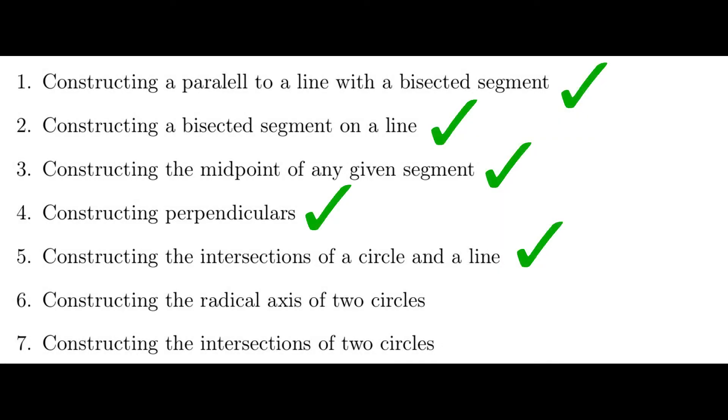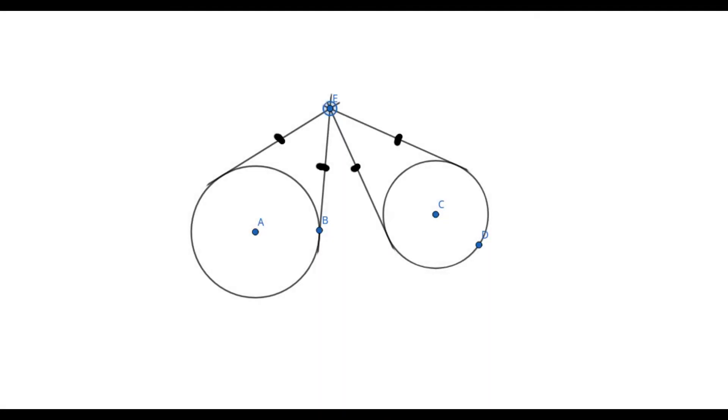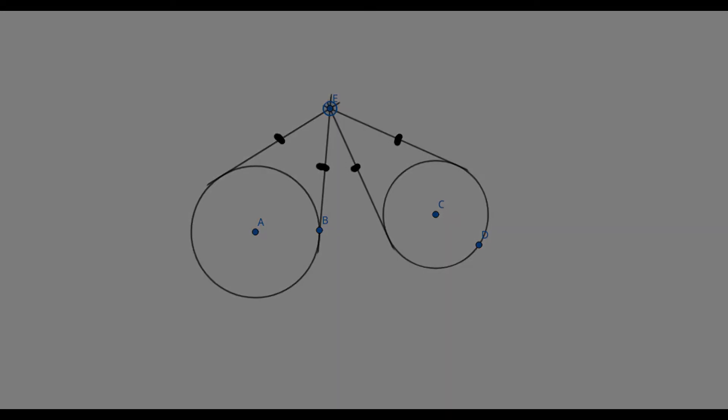Now the only thing left to do is to find how to construct the intersections of two circles. We need one last thing before that: the radical axis. The radical axis is the locus of all points which have equal powers with respect to two circles. What this means for our purposes is that the lengths of the tangents from that point to the two circles are equal. The radical axis of two circles always passes through their intersection points if they intersect — and this is what we are going to use.